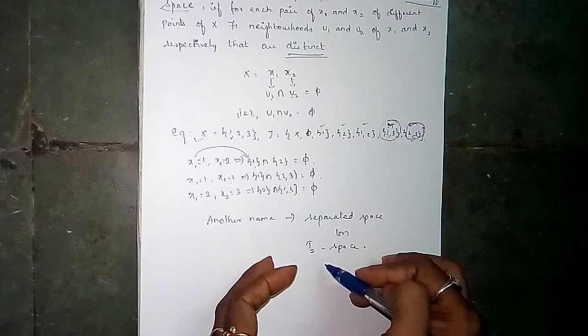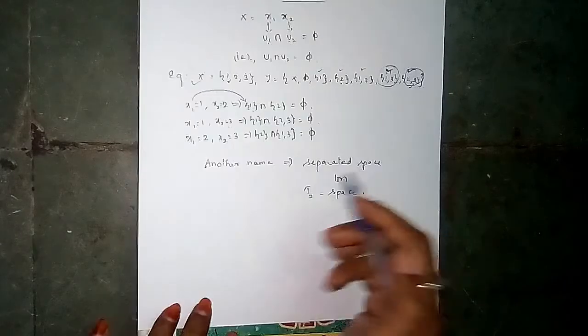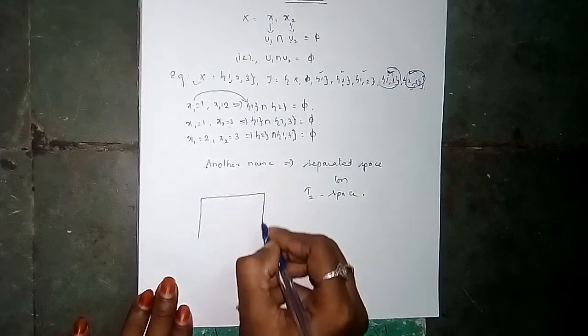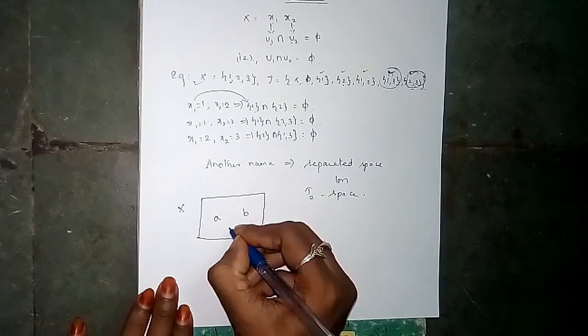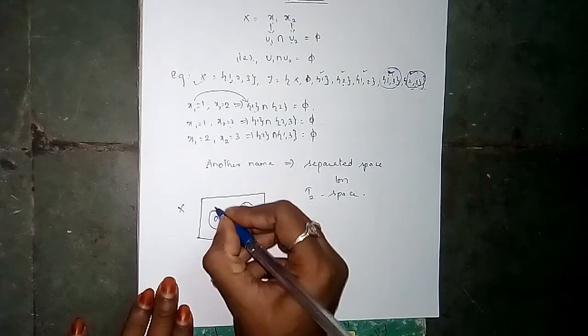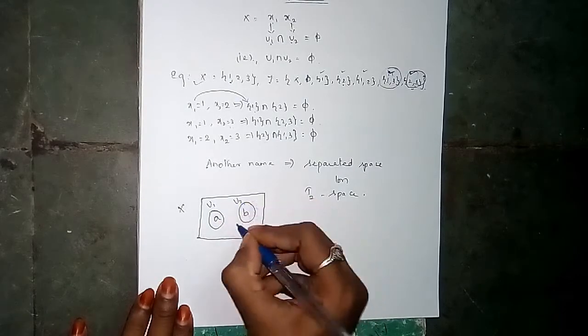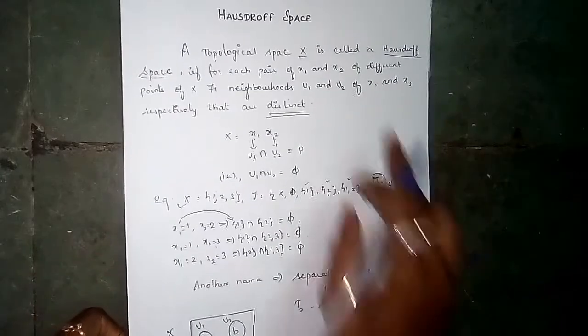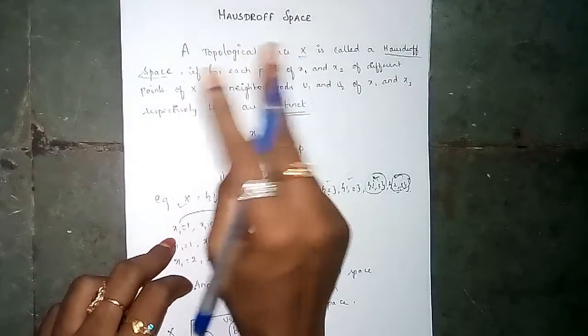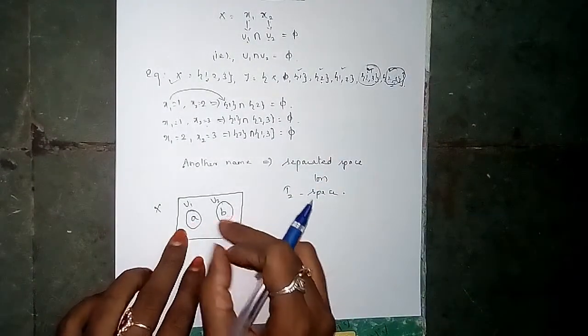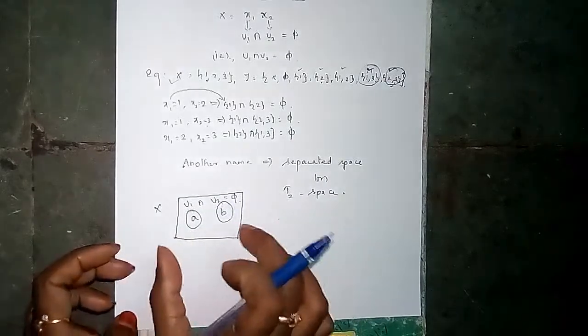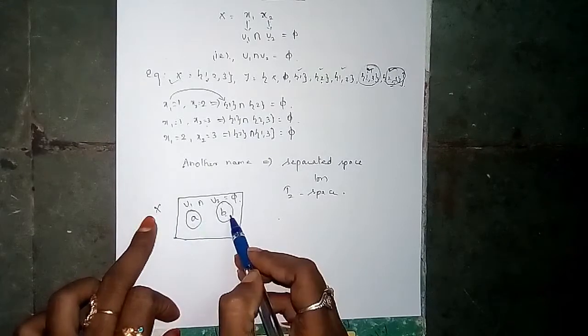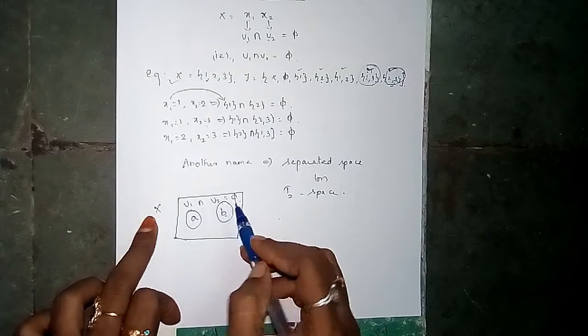So if we explain with a diagram, this is the whole space X. Now there are two points. This is where u1 and u2 are. These two are different points. So this is one neighborhood and this is another neighborhood. The two neighborhoods intersect, and this intersection is empty.